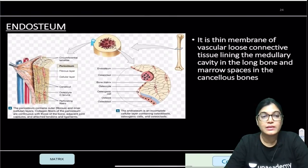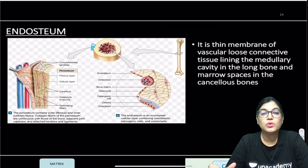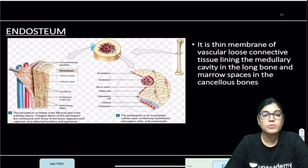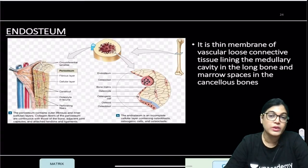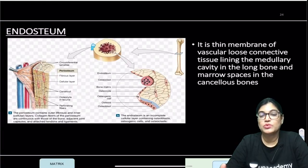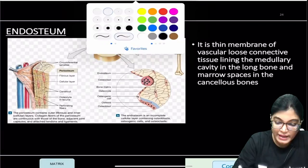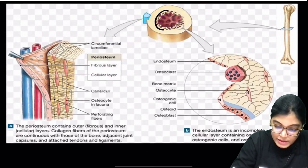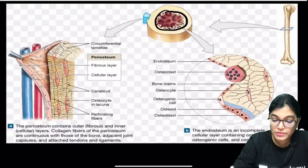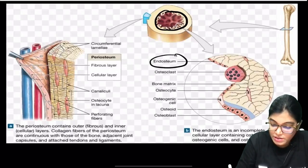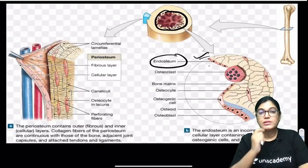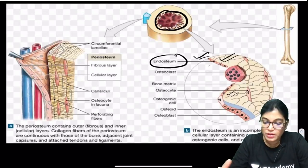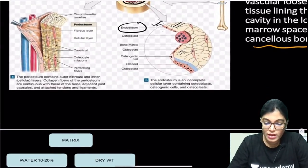The endosteum is the inner layer close to the bone marrow. It is a thin layer of vascular loose connective tissue lining the medullary cavity and the bone marrow spaces of cancellous bone. The interior is lined by endosteal lining cells, which also provide osteogenic properties to the interior of the bone.